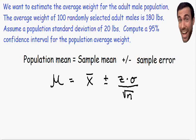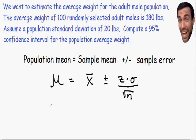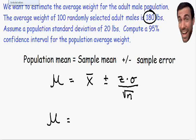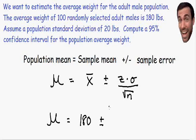This example asks us to compute a 95% confidence interval for the population average weight. We're trying to find the population mean using a 95% confidence interval. The population average equals the sample average X-bar, which is given as 180 pounds. So X-bar equals 180 plus or minus the sampling error: Z multiplied by the standard deviation over the square root of N. For a 95% confidence interval, the Z value is 1.96.